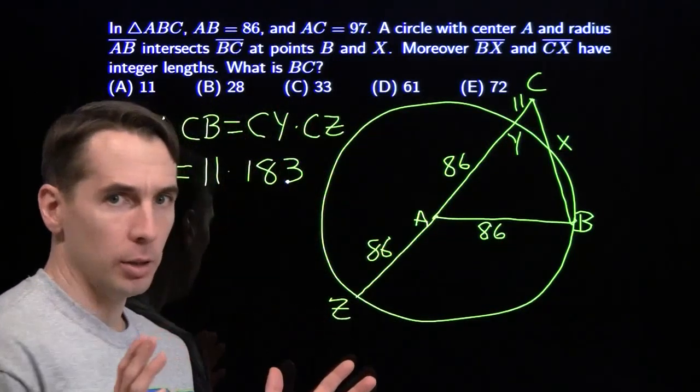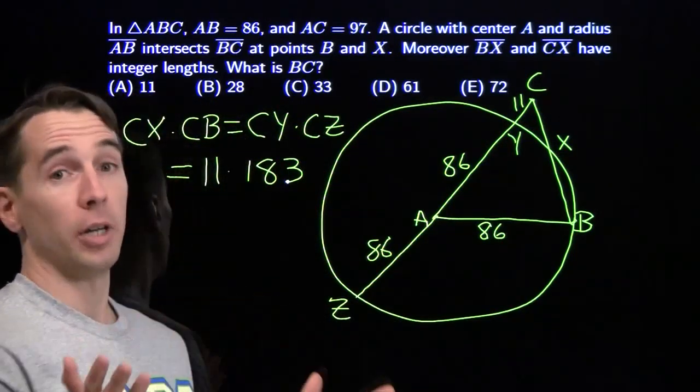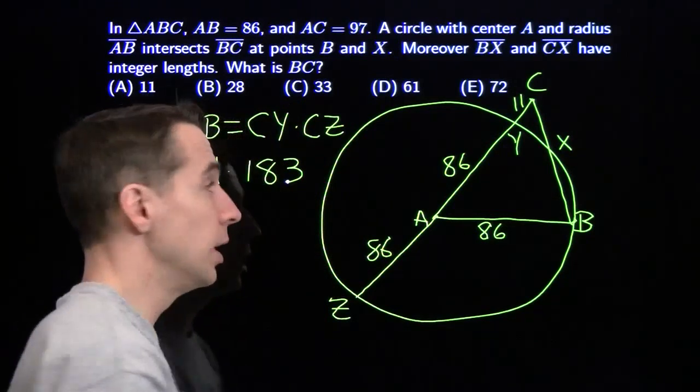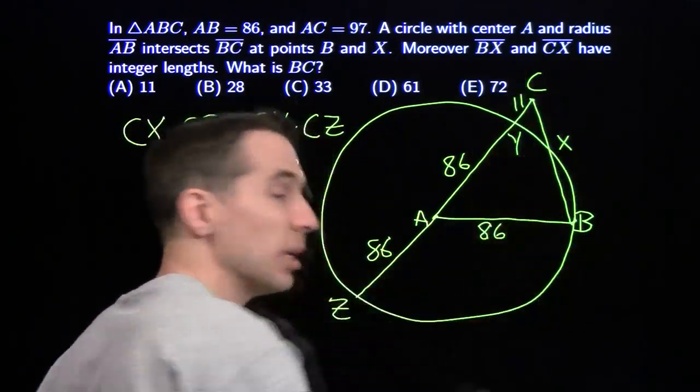So BC can't be 183, it can't be greater than 183, we know this has to be less than 183. We also of course know that CX has to be less than CB.